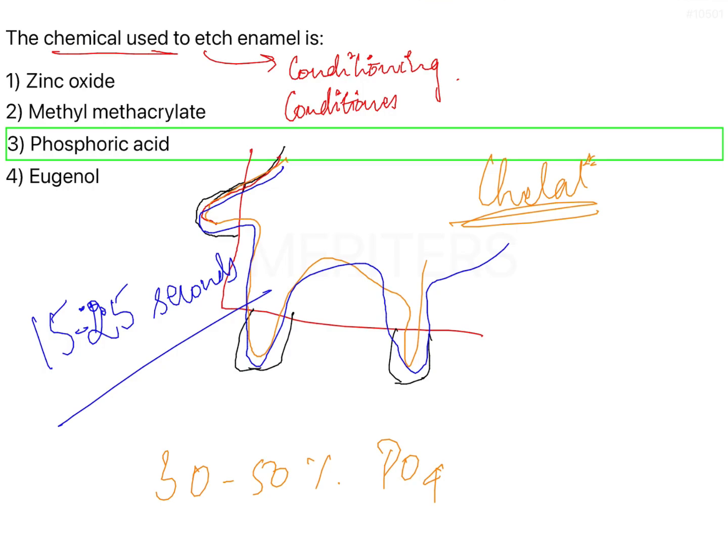Another important question that was asked in the past was, how is etching of primary teeth different than permanent teeth? Initially, it was considered that primary teeth contain aprismatic enamel and need to be etched for a longer period of time. However, recent studies indicate very clearly that you do not need to follow any of those protocols. You can etch the enamel of primary teeth similar to that of permanent teeth for the same 15 to 25 seconds.